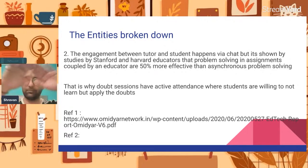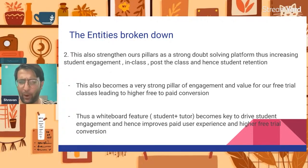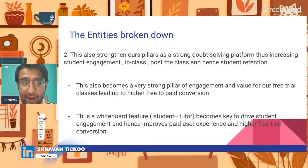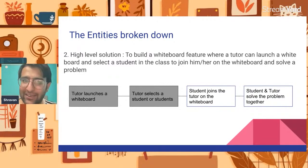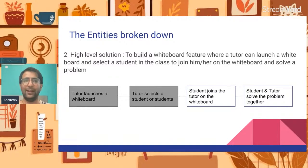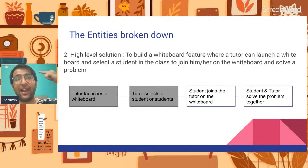After the objective and the 'why' of the problem is explained in detail — covering engagement pillars and references — the third part of the PRD is the high-level solution. For example: the tutor launches a whiteboard, creates a diagram, selects a group of students, students join the tutor on the whiteboard, and finally the student and tutor solve the problem together. That's the high-level solution.